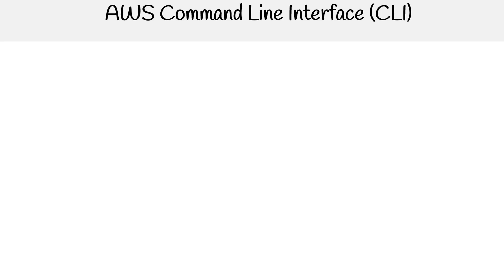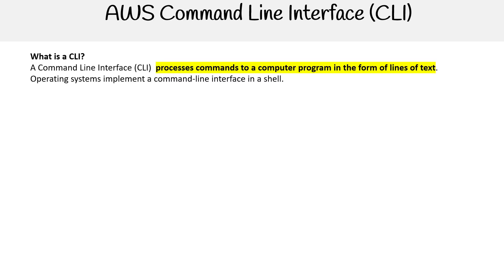Hey, this is Andrew Brown. We're taking a look at the AWS CLI, and I think we should ask what CLI is first. CLI stands for the command line interface, which is for processing commands to a computer program in the form of lines of text.